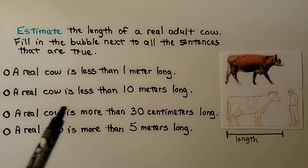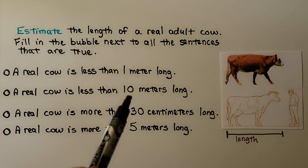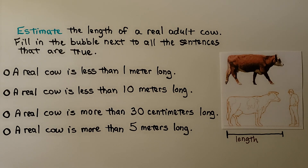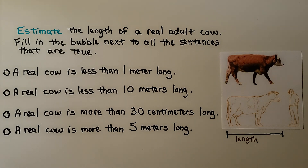Do you think a real cow is less than 10 meters long? Can you remember the meter stick I showed you? Do you think a real cow is less than 10 of those meter sticks? If you said yes, you're right. 10 meters is very, very long. So we filled in the bubble, because that's true — a real cow is less than 10 meters long.